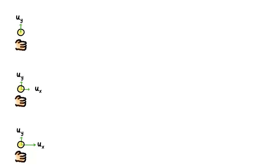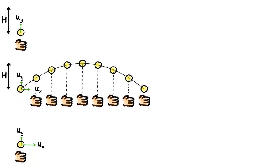So a projectile motion is just me doing a vertical throw on a moving bus. I get to control the vertical motion — like how high up the ball goes and how long it stays in the air. And the bus driver controls the constant speed horizontal motion — like how fast the ball moves horizontally.